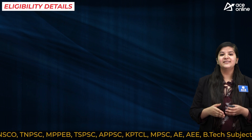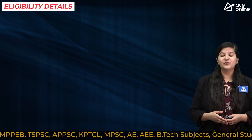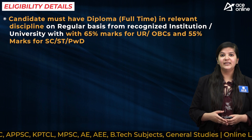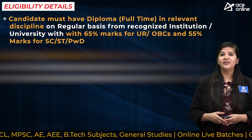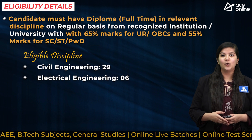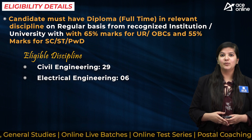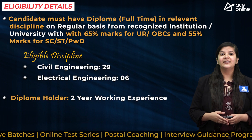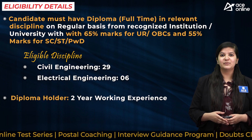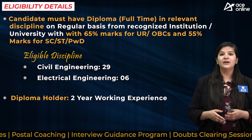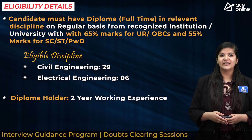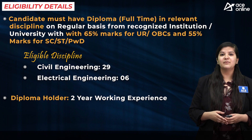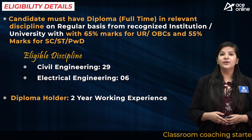Now let's look at the essential educational qualification requirements. Candidates need to have a diploma in engineering from a well-recognized university or institute on a regular basis. The diploma should be in the same discipline the candidate is applying for. The minimum qualifying percentage is 65% for unreserved category and 55% for reserved categories, that is SC, ST, and PwD.